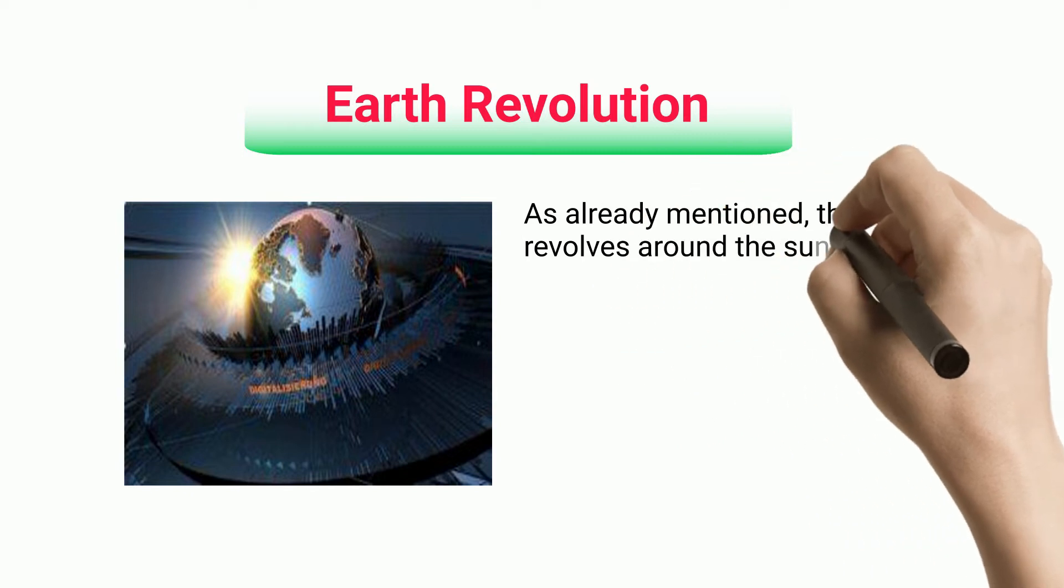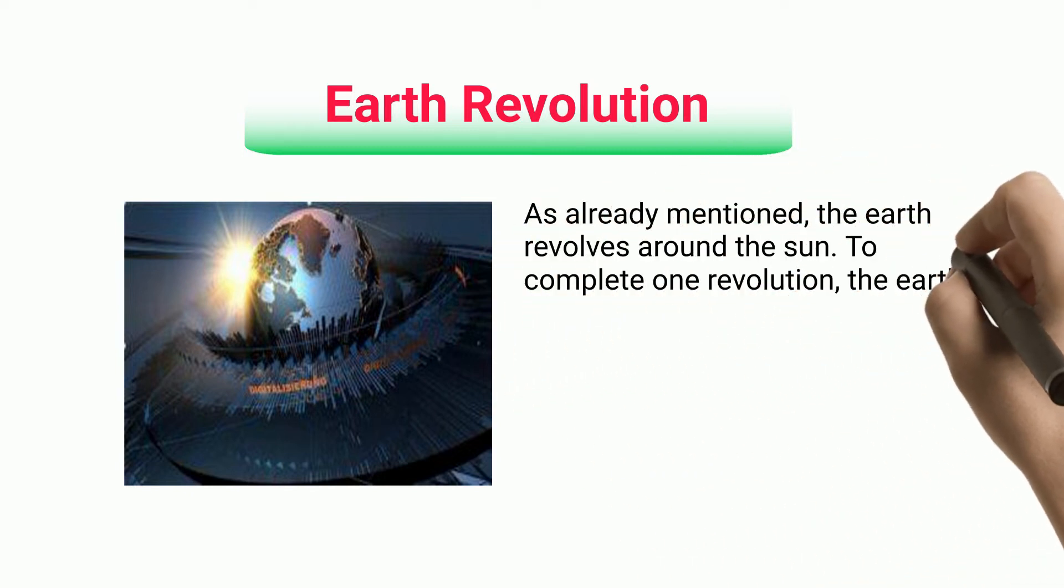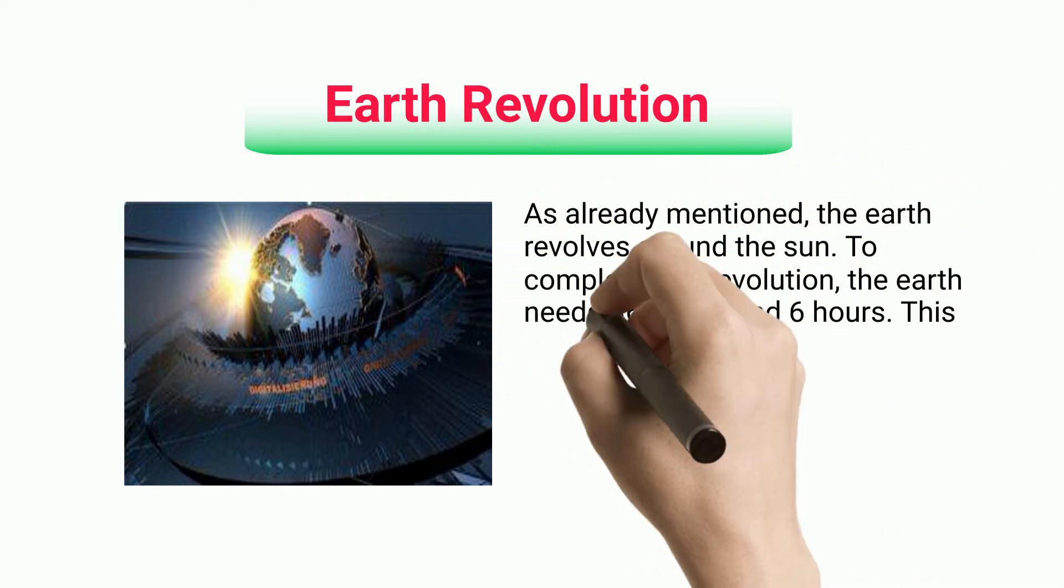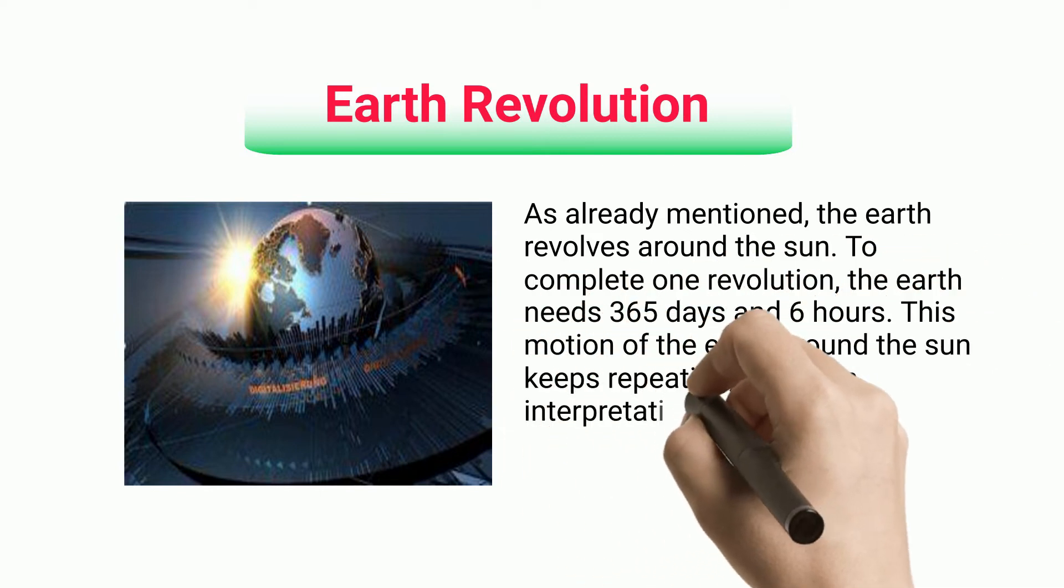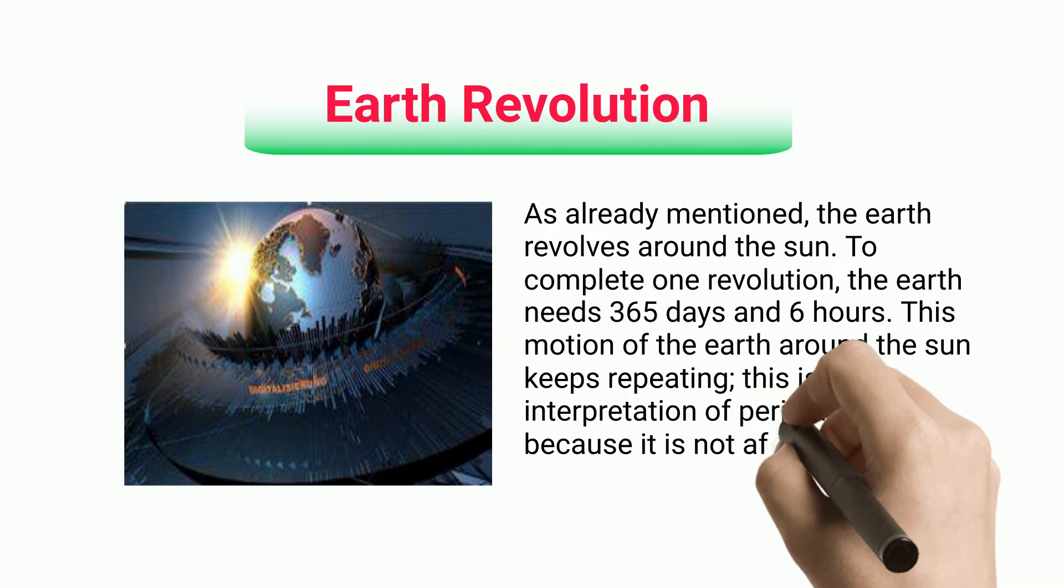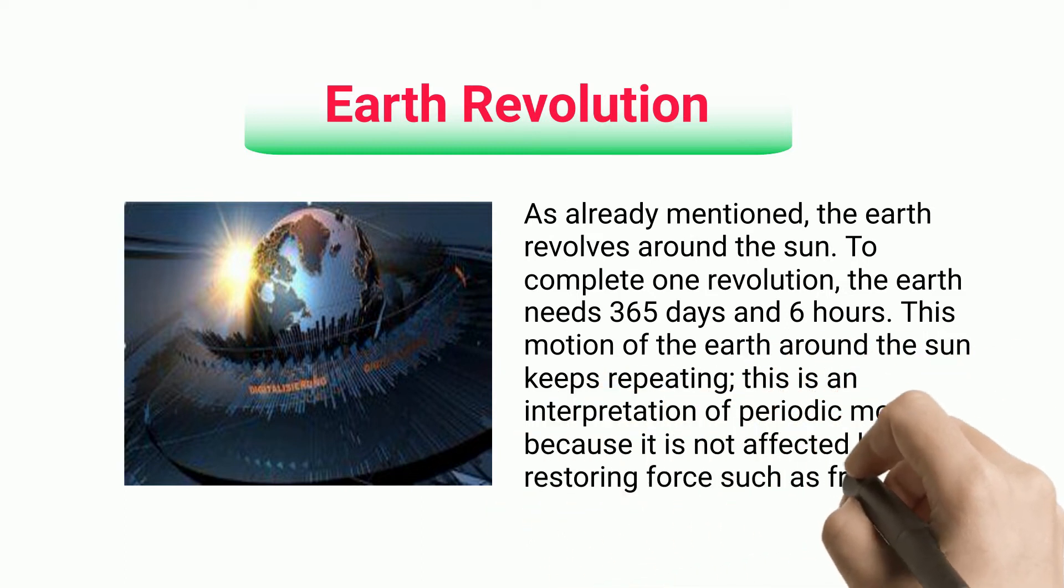Earth revolution: As already mentioned, the earth revolves around the sun. To complete one revolution, the earth needs 365 days and six hours. This motion of the earth around the sun keeps repeating. This is an interpretation of periodic motion because it is not affected by any restoring force such as friction.